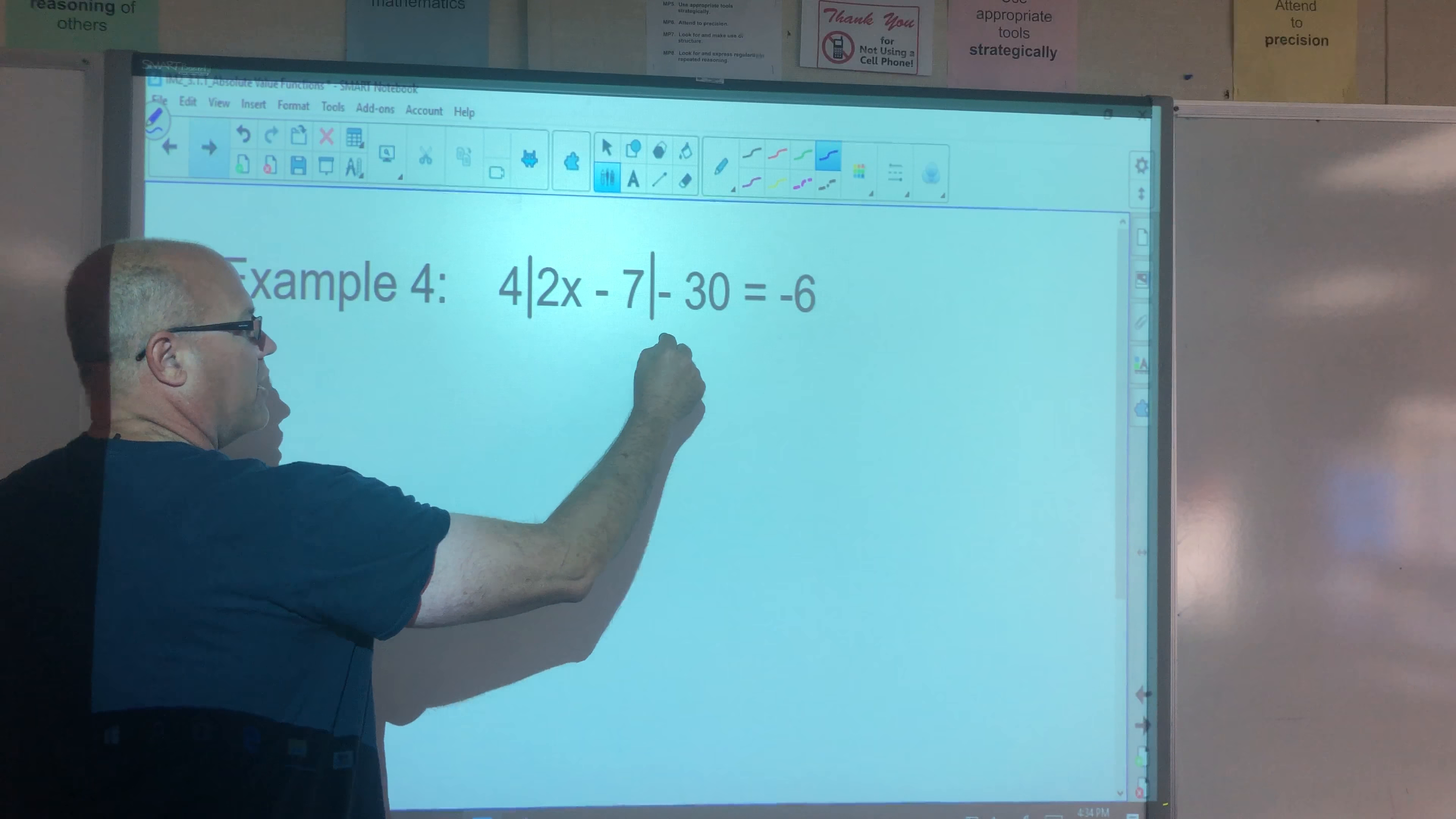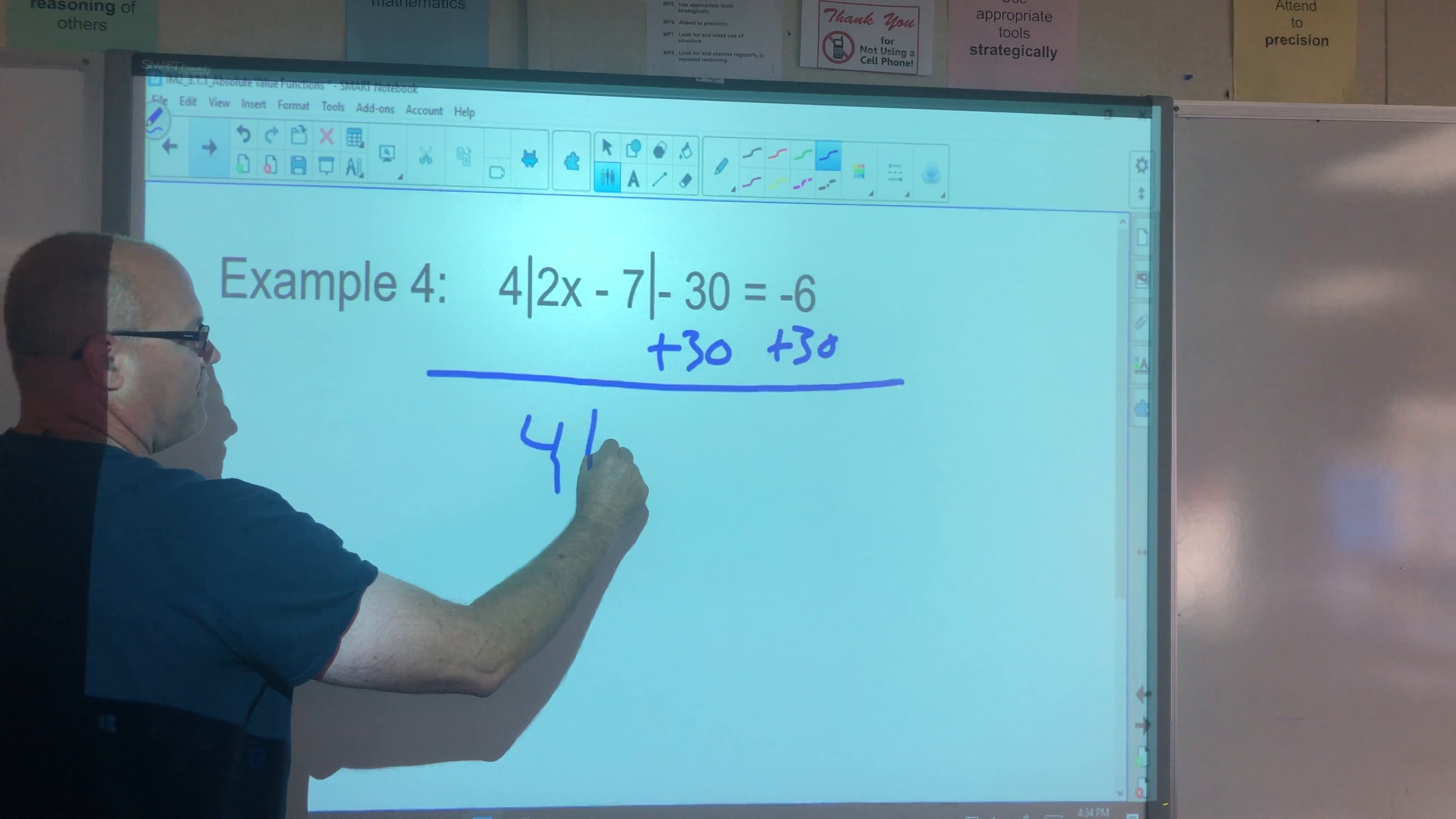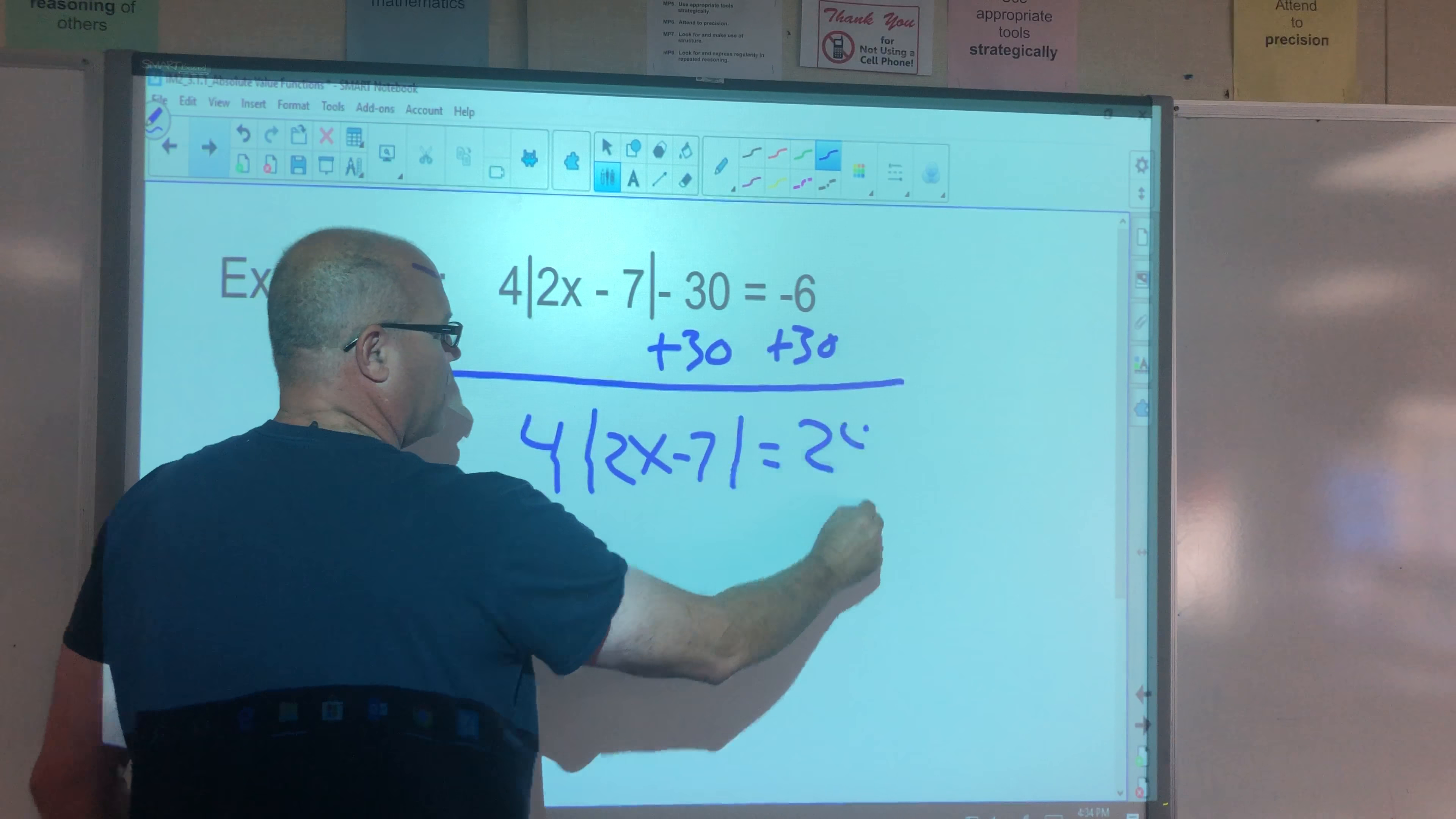Addition property of equality. We're going to add the opposite, which is positive 30 to both sides. So then we have four times the absolute value bars of 2x minus 7 equals positive 24.